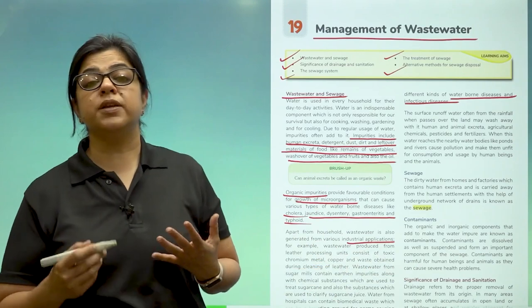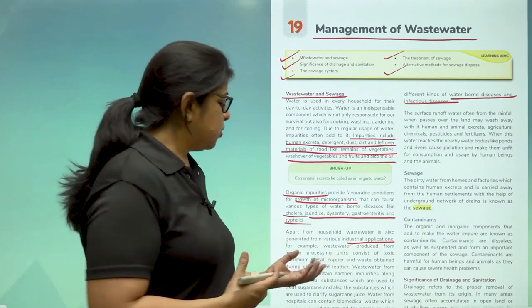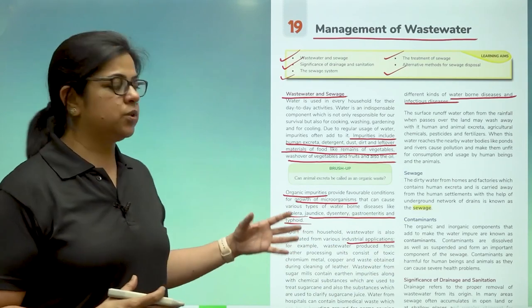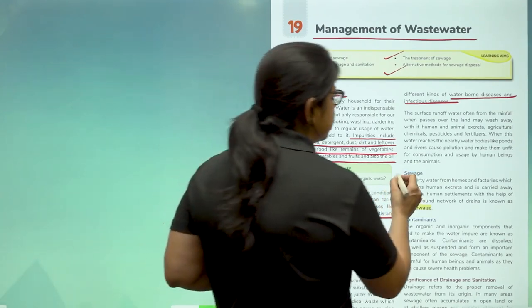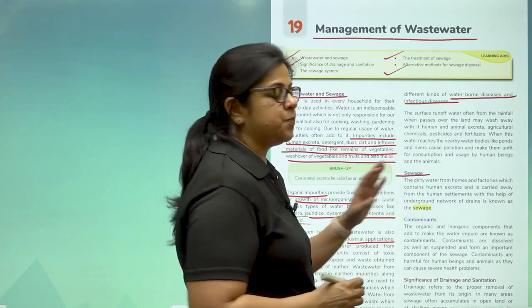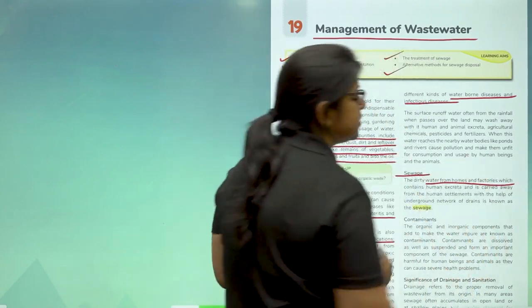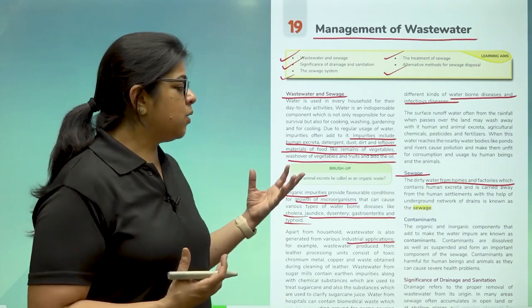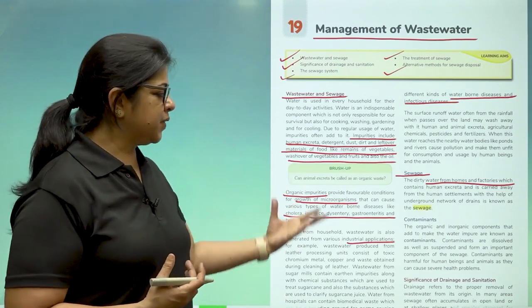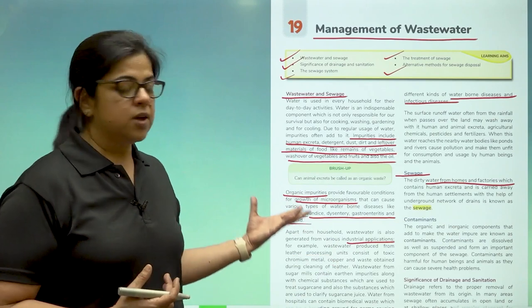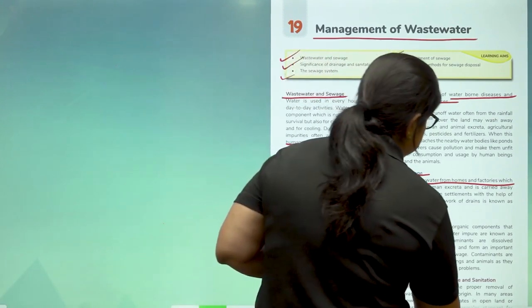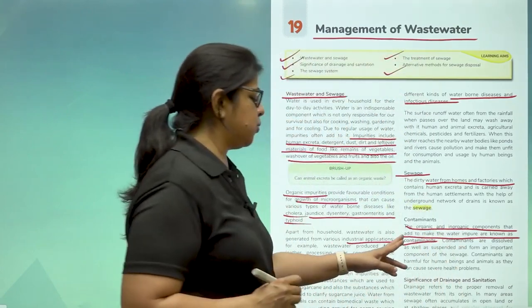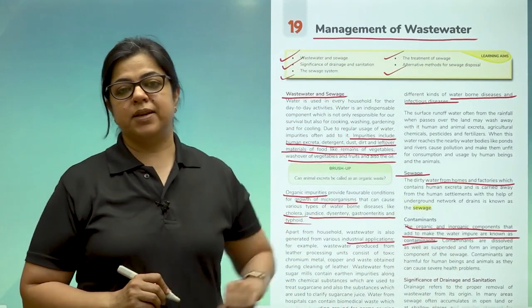In agriculture, we use so many fertilizers and manures which also release a host of chemicals into the water. So, what is sewage? Sewage is basically cleaning this water from homes and factories into a usable form. There are many contaminants — the organic and inorganic components that add to make the water impure are known as contaminants.